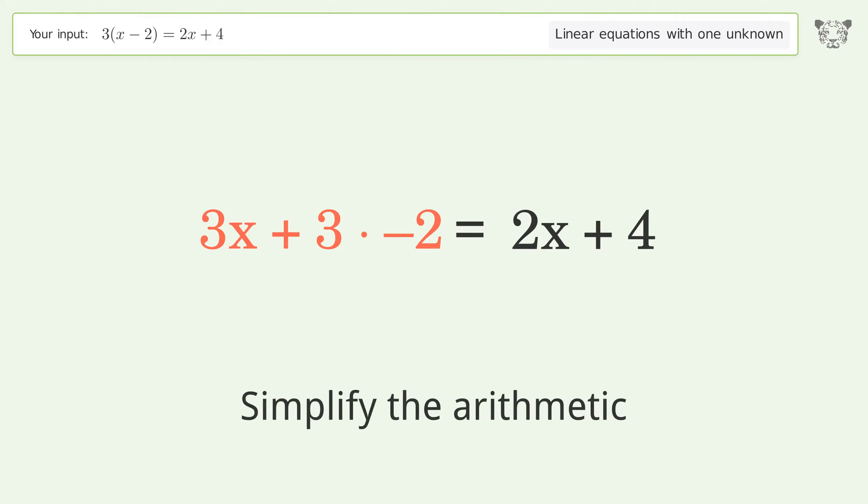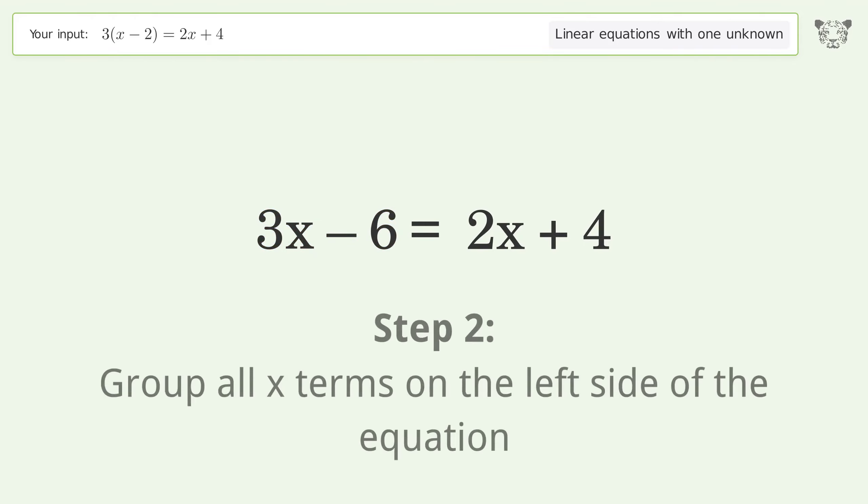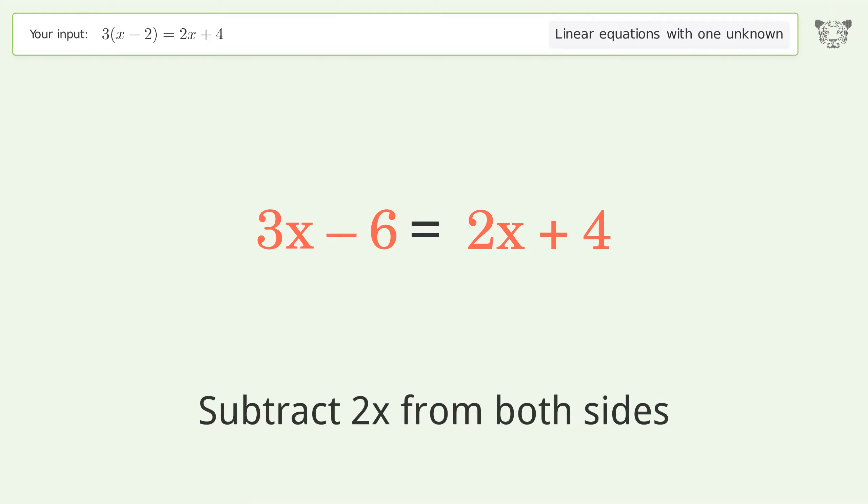Simplify the arithmetic. Group all x terms on the left side of the equation. Subtract 2x from both sides.